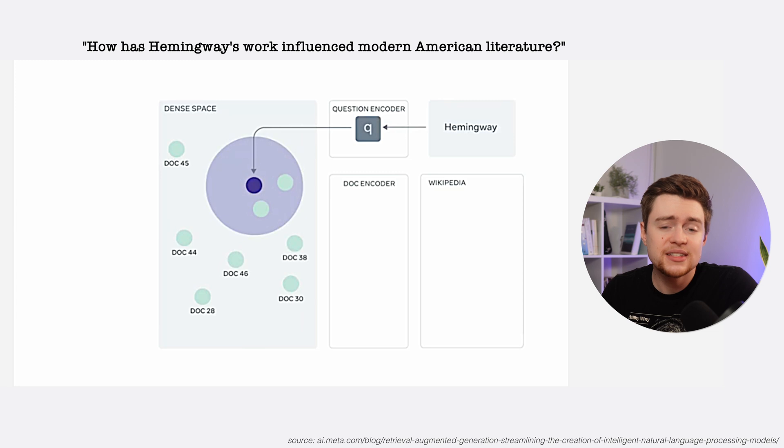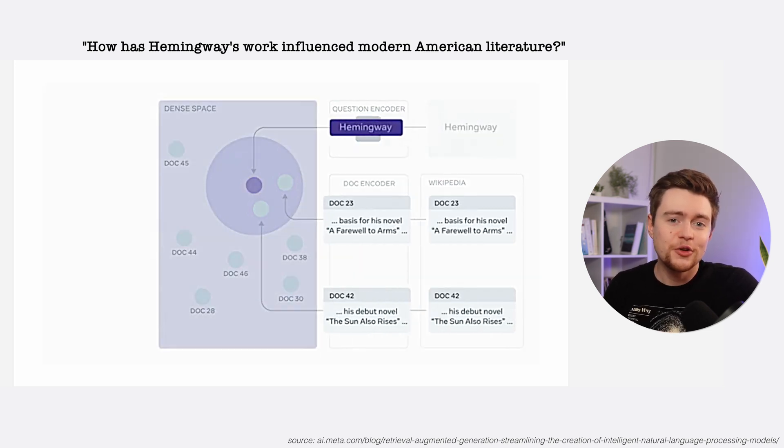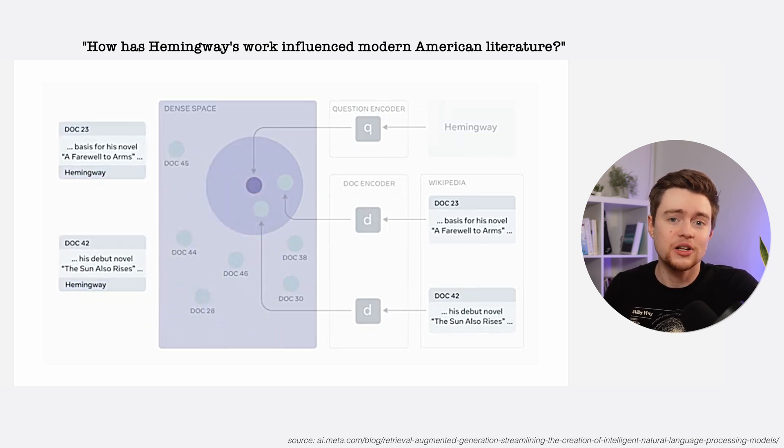RAG then identifies the documents most closely related to the question. These document vectors are created in the same way, by using another encoder to transform the Wikipedia text into vector representations. Once the most relevant documents are identified and retrieved, their content is combined with the original question prompt and processed by the LLM as usual.